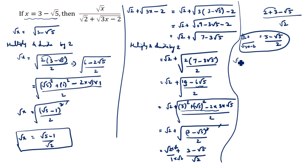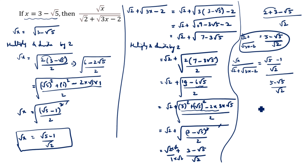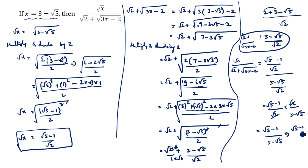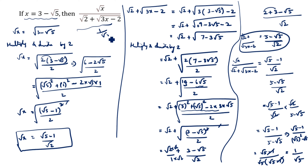We will now compute √x divided by (√2 plus √(3x minus 2)): that is (√5 minus 1)/√2 divided by (5 minus √5)/√2. The √2 cancels, giving (√5 minus 1) divided by (5 minus √5). Writing 5 as √5², we get (√5 minus 1) divided by √5(√5 minus 1). The (√5 minus 1) cancels, giving 1/√5 as the answer.